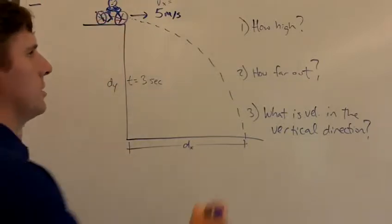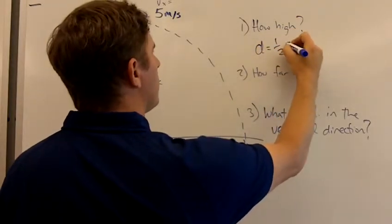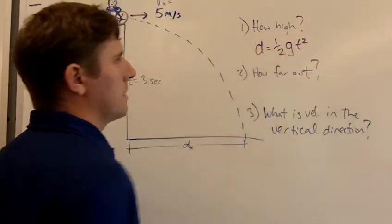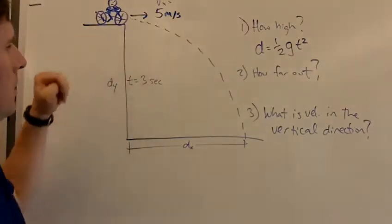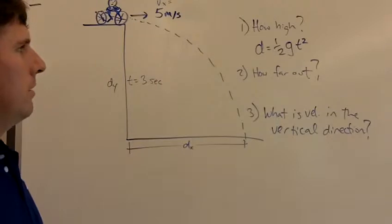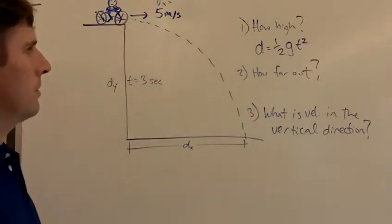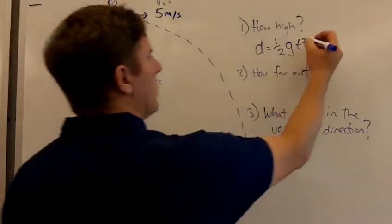If we want to determine how high the cliff is or how far he fell, it's the same question. So d equals one-half g t squared, because all you have to know is how long someone was in the air and how long it took to hit the ground if it fell from its highest point.